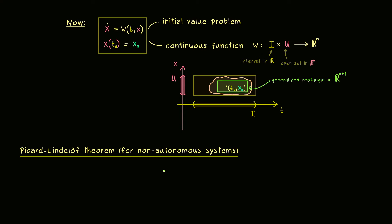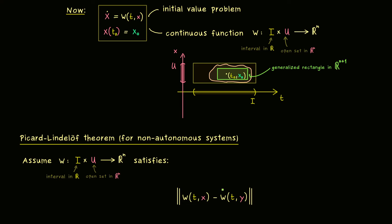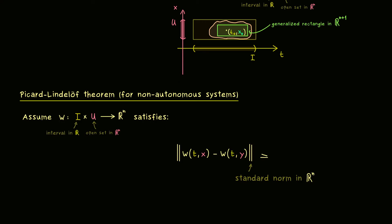We are ready to discuss the Picard-Lindelöf theorem in this setting, for non-autonomous systems. Let's assume we have a function w as before, with a domain in R^(n+1). This function should satisfy a local Lipschitz condition similar to the one in the original theorem. However, we can soften this condition a little because we only need it in the second argument of w. Recall that the Lipschitz condition tells us the distance in the output space can be estimated by the distance in the input space.